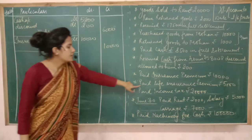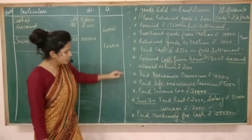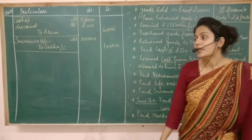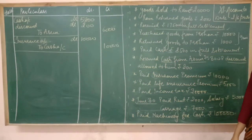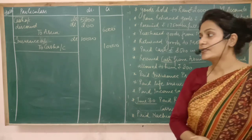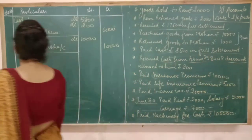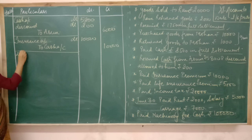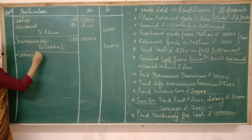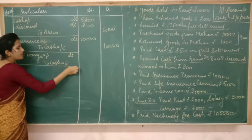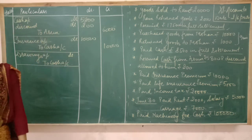Next: paid life insurance premium of 5000. See the difference between paid insurance premium and paid life insurance premium. Life insurance premium is always for the life of the owner of the business. The owner is paying the premium of his insurance from the firm's cash, so it is a kind of personal expense or drawings. So instead of debiting insurance, in this entry you have to debit the drawings account. Entry: drawings account debited to cash.